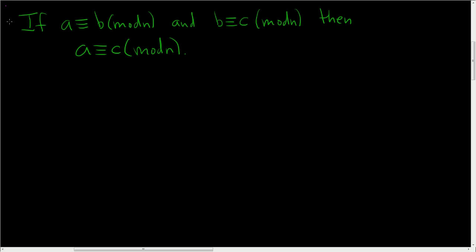All right, this is a really nice problem. If A is congruent to B modulo N and B is congruent to C modulo N, then A must also be congruent to C modulo N.